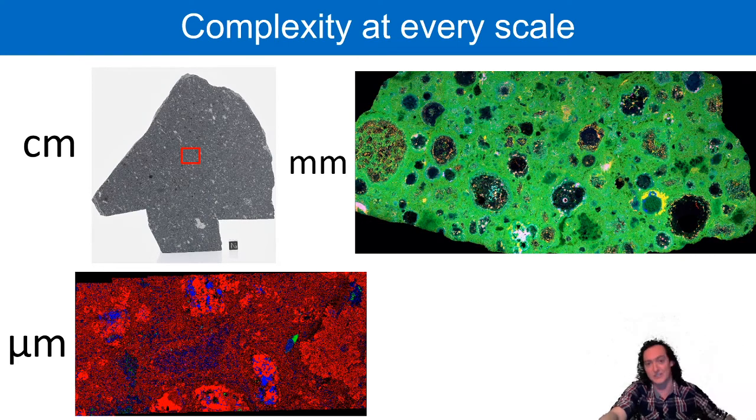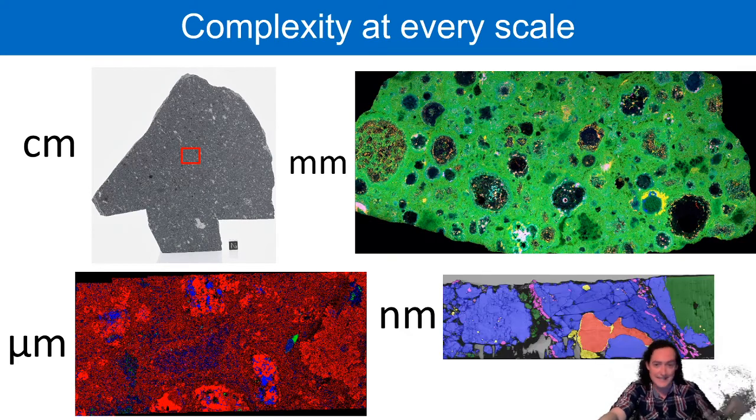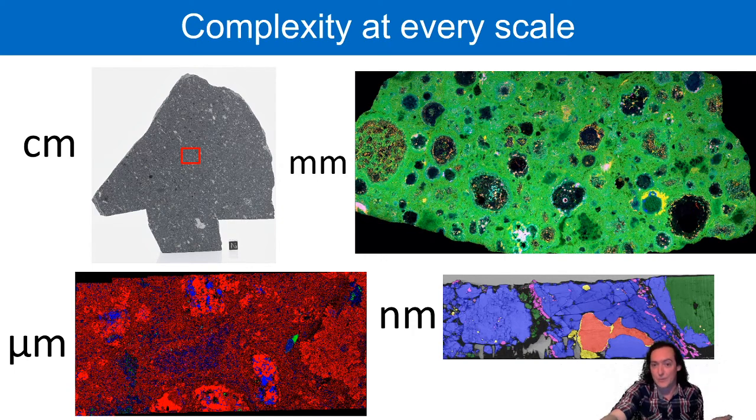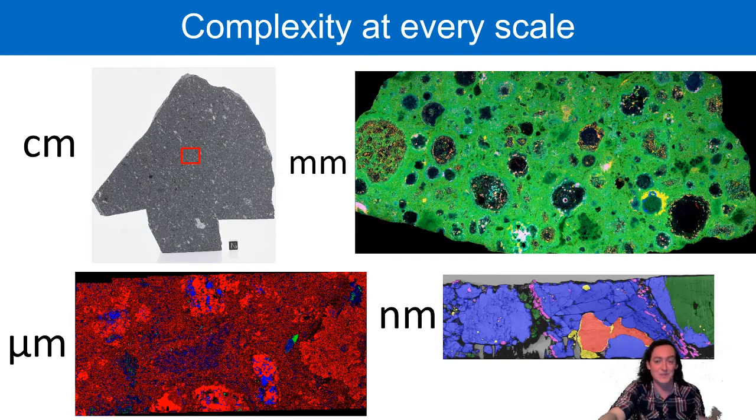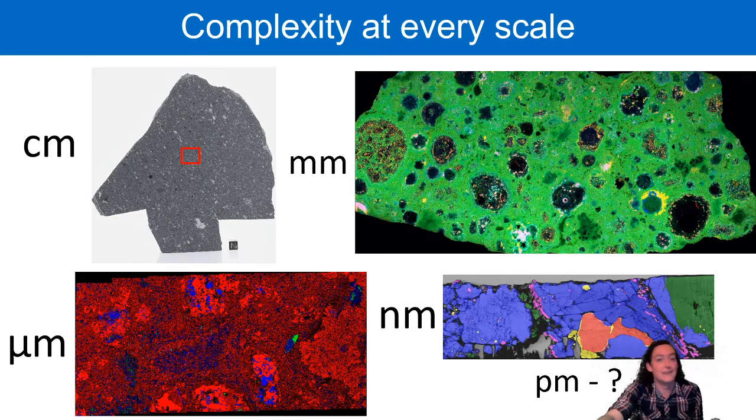They're texturally diverse, the matrix is chemically and mineralogically heterogeneous, and that problem just keeps getting worse. As you go down to the micrometer scale, you continue to see even more complexity. Down at the nanometer scale, you start to give up with this nano-mineralogical hellscape. And fortunately, unfortunately, advances in microscopy techniques have allowed us to start accessing the picometer scale, and it just gets worse.